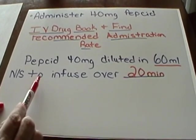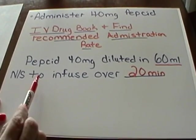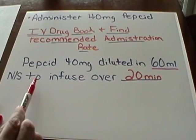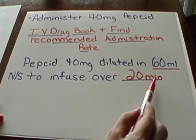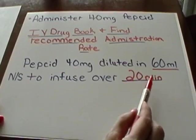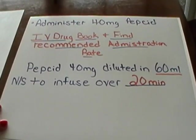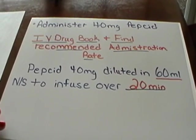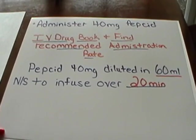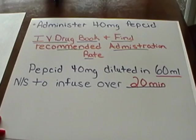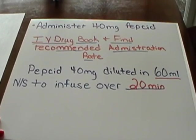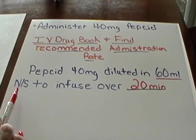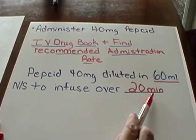We checked our drug book and found that the recommended time for infusion of 40 milligrams of Pepcid is 20 minutes. We have verified that the volume it is diluted in — 60 milliliters — is correct. So we're going to infuse Pepcid 40 milligrams diluted in 60 milliliters of normal saline over 20 minutes.